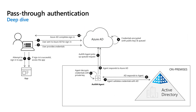How does this work? As a prerequisite, users need to be provisioned into Azure Active Directory from an on-premises Active Directory if you're using Azure Active Directory Connect. Pass-through authentication does not apply to cloud-only users, so just keep that in mind.